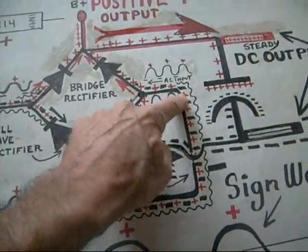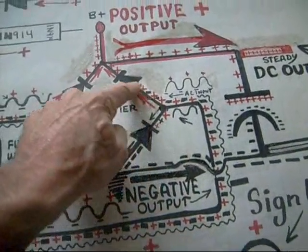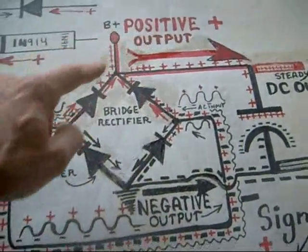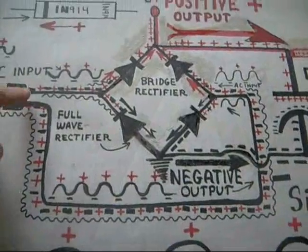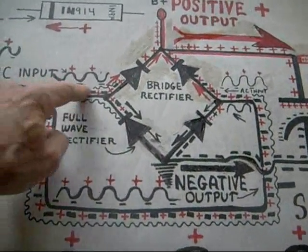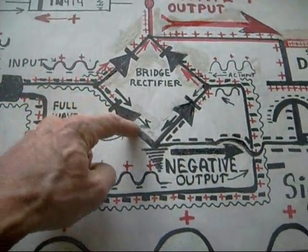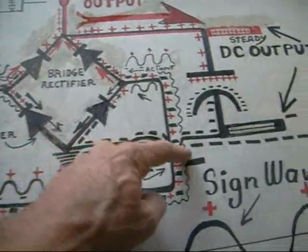You've got the negative and positive going in this way. Only positive can come out that way in the direction of the arrow. And if you look at it, if it were negative going voltage, negative can only go in this direction and come out here. So you've got your negative coming out this way.